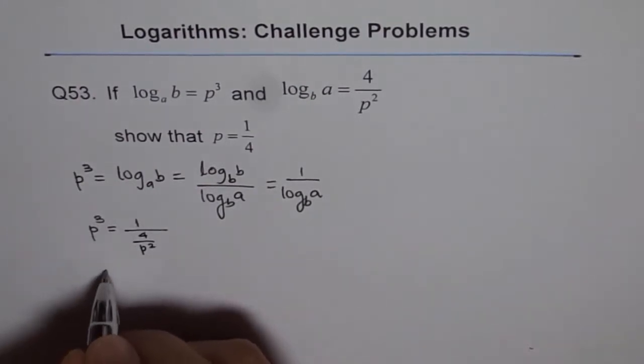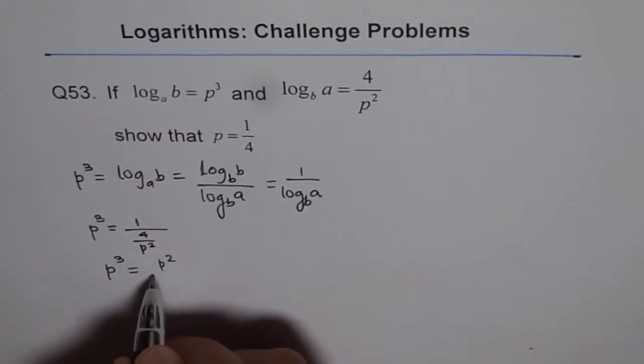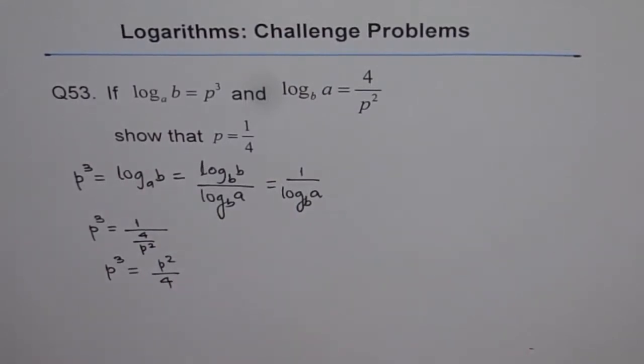So that is to say that P cubed equals P squared over 4. So we get P squared over 4. And we need to prove what? P equals 1 over 4, which is evident from here.